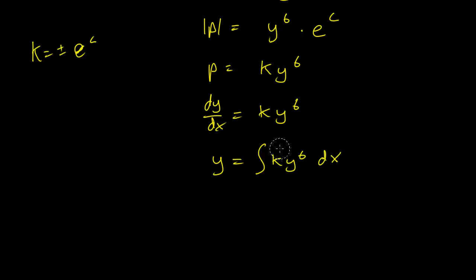That's not what we want, sorry, that's a big mistake. Okay, we integrate again of course, and we take 1 over y^6 dy equals k dx. Integrate both sides.